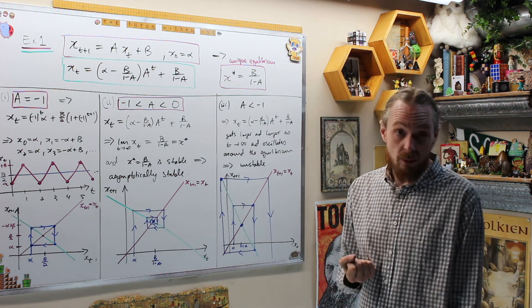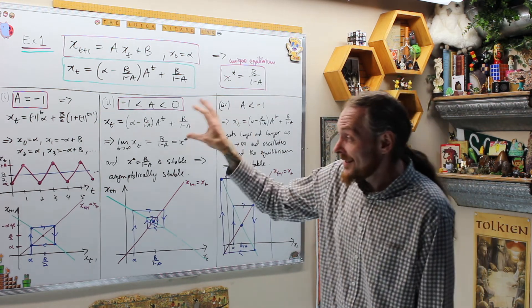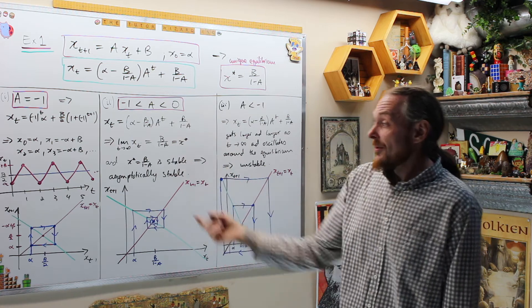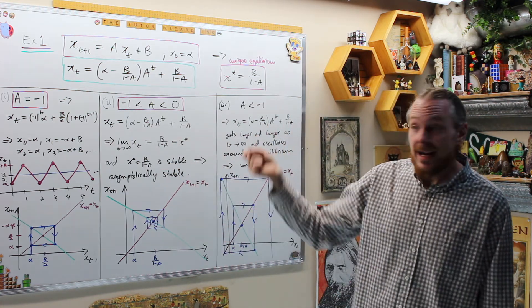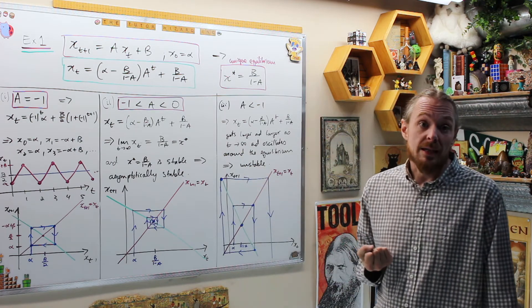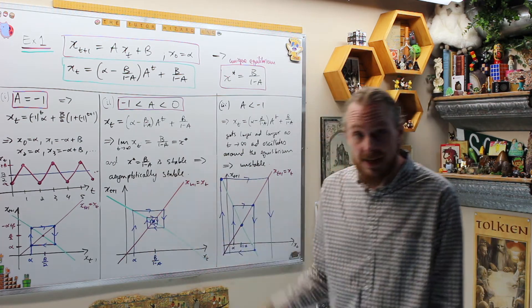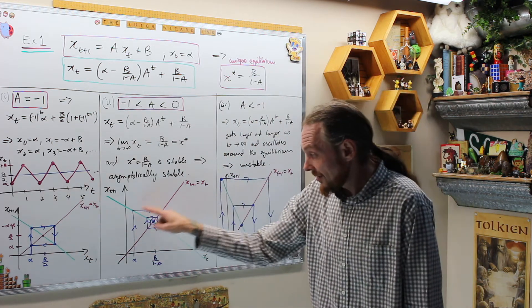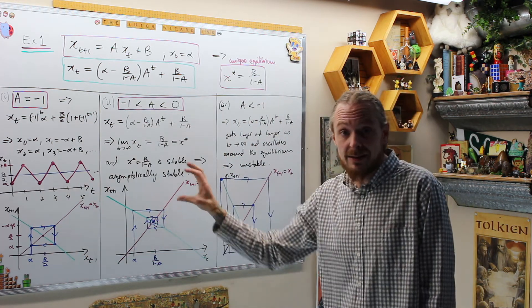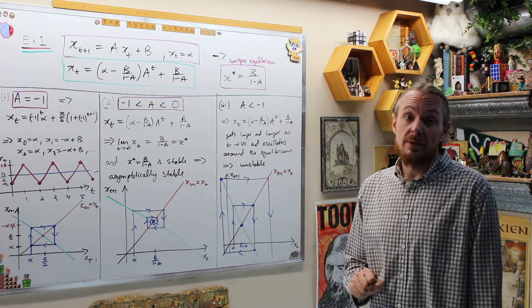So not only is this now stable, it's also attracting. So this tells us that x*, in this case, is stable and attracting, therefore, it is asymptotically stable. And you can see from the cobweb diagram, now it just doesn't go around in a nice square around the equilibrium. It oscillates around the equilibrium, but it gets closer and closer because it's converging to that value.